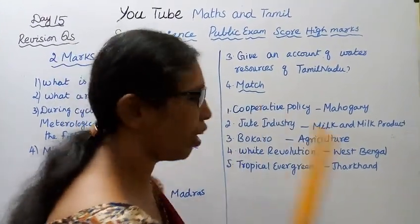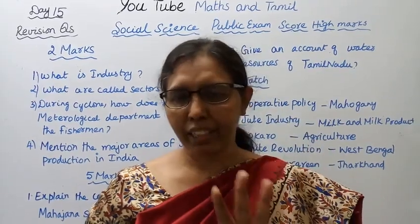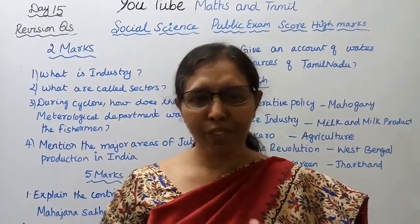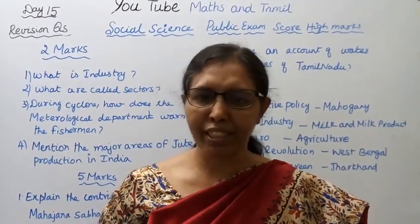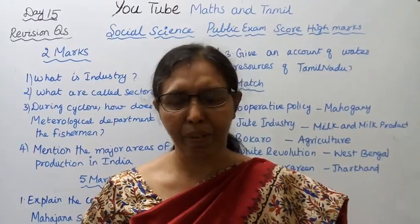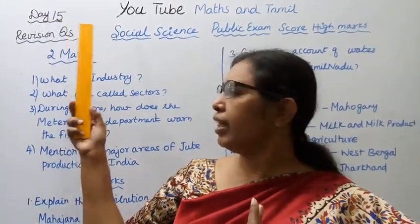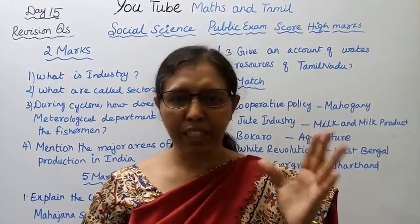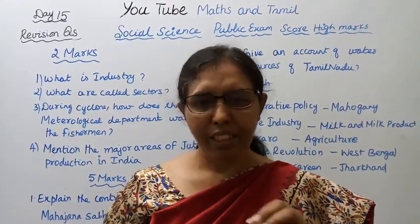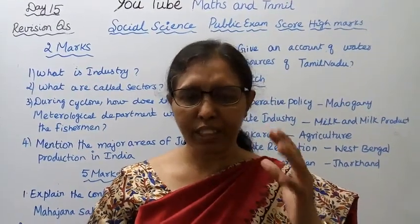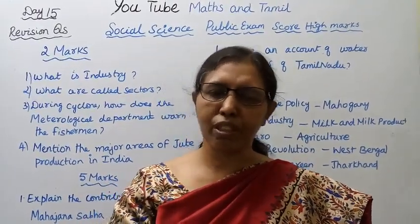This is Day 15 — all revision questions. It covers Volume 1 and Volume 2, with a maximum of five marks. This is a timeline and it's easy. For match, there are 2 matches, and history map is 5 marks — that is compulsory. You can choose the 5 marks. This channel helps you to get 100 marks. Subscribe to the channel.